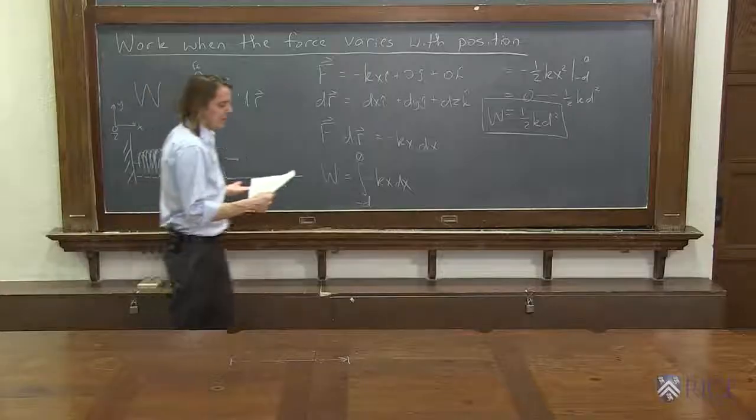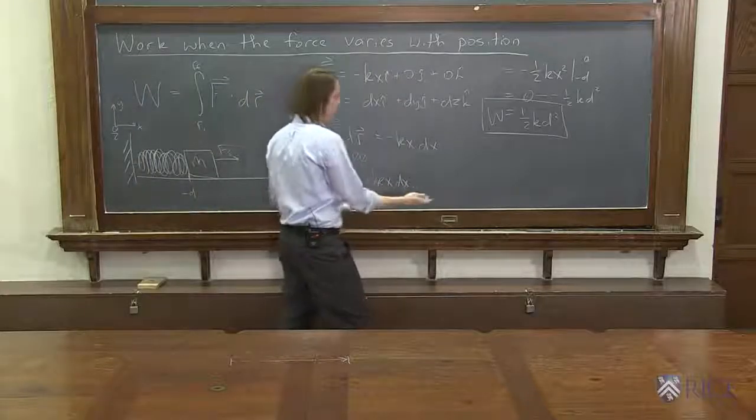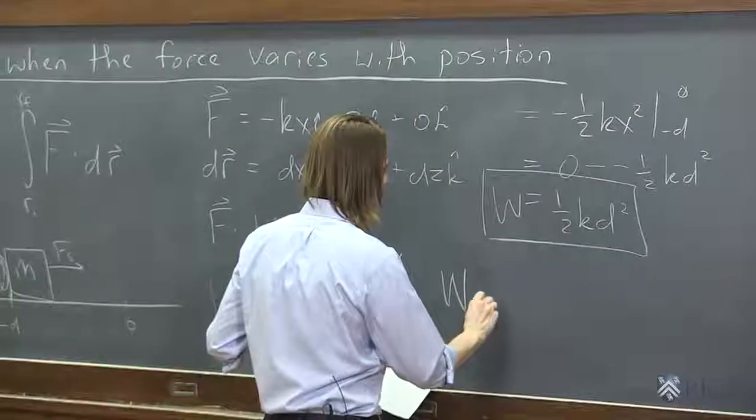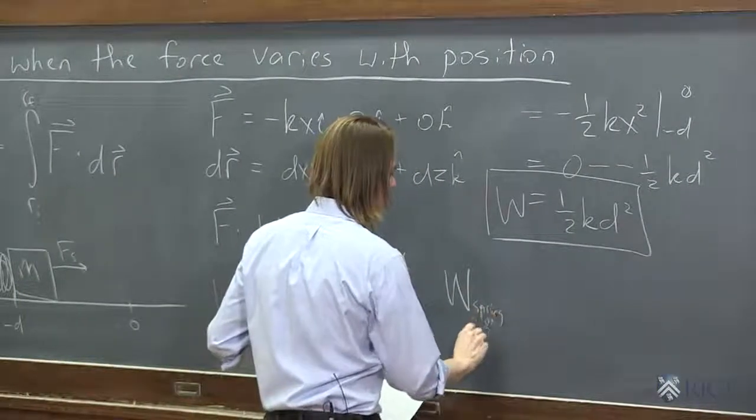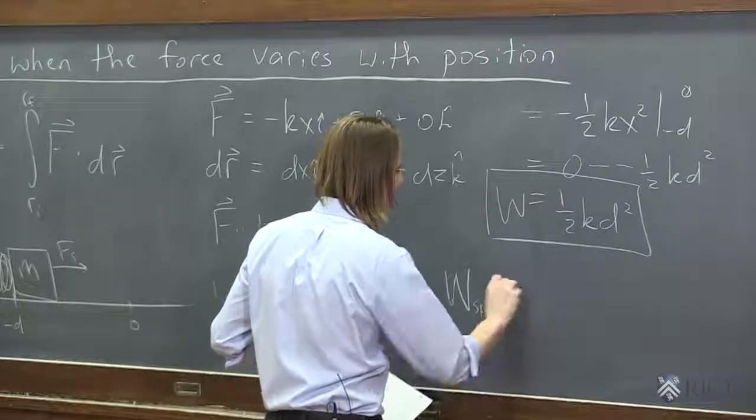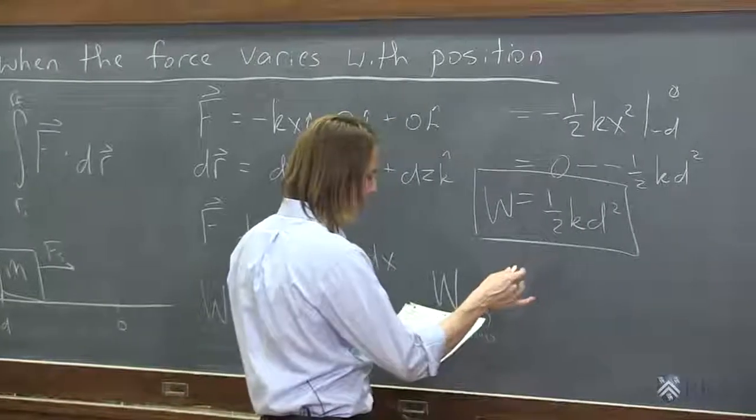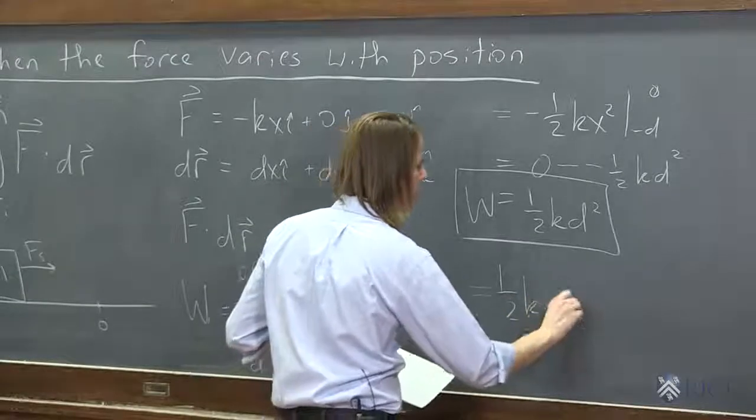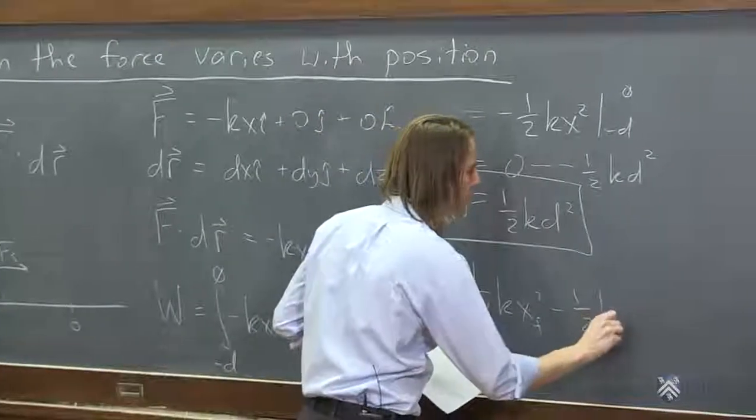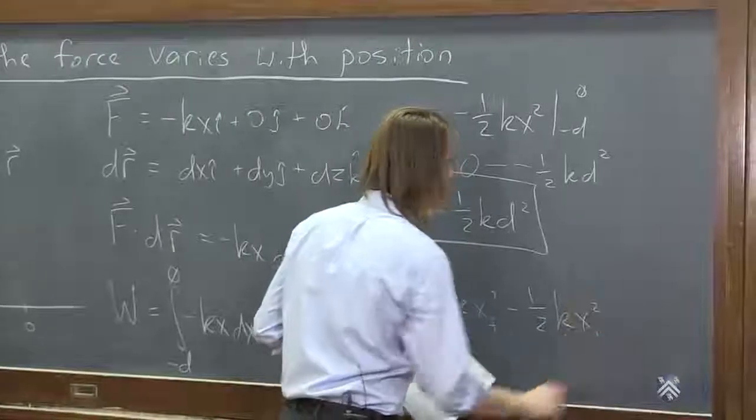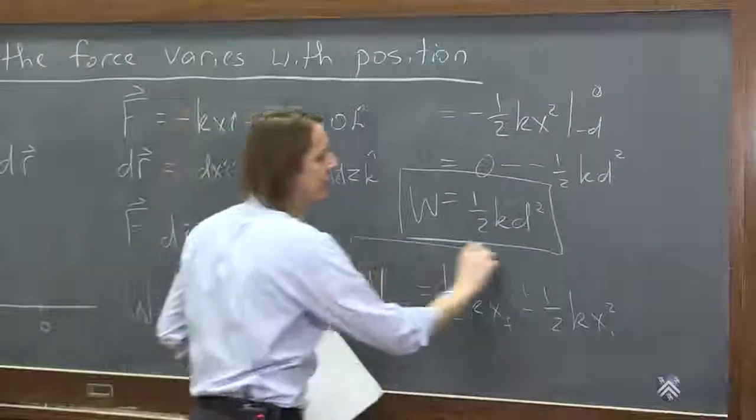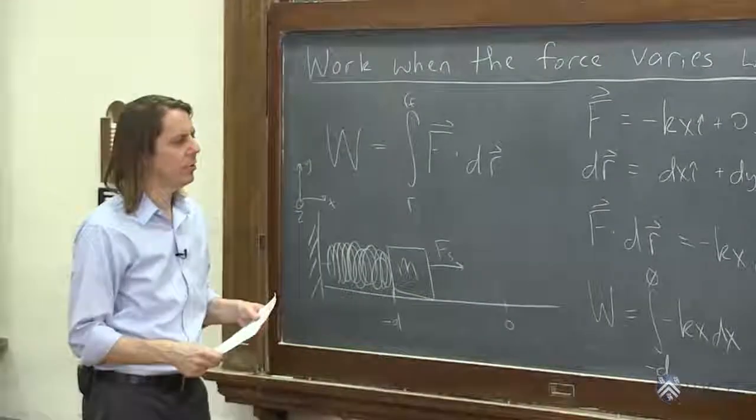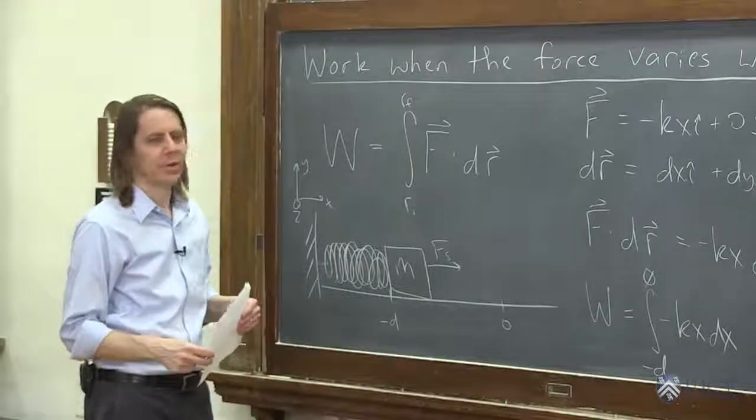In general, if you want to write this and really not do a specific case of the limit, you could also write it this way. You could say the work of a spring on a mass, you could say it's just one-half KX final squared minus one-half KX initial squared. If you define those positions with respect to the rest length of the spring, where the forces are zero, then you could always find one that way.